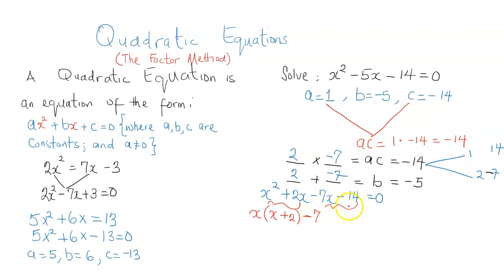So I'll factor out negative 7 from negative 7x, I'm left with x. And here I'm left with a positive 2 because the minus sign has been factored out.